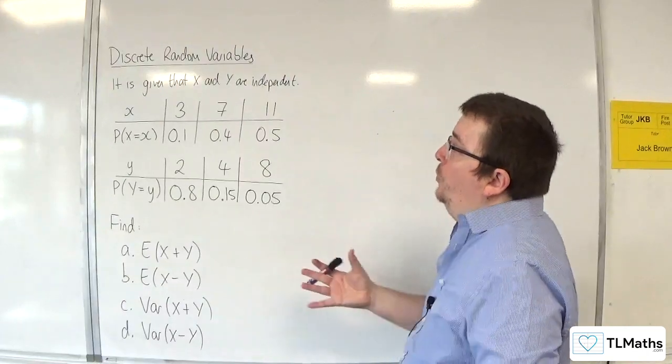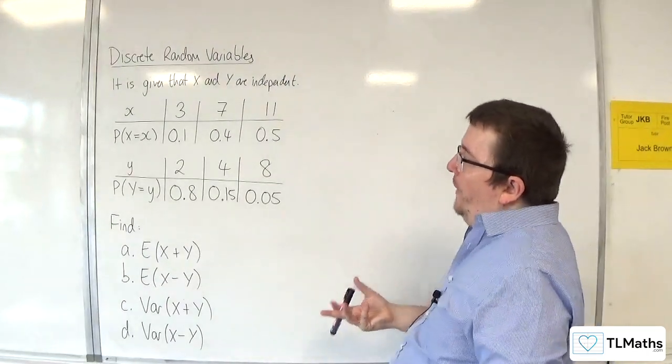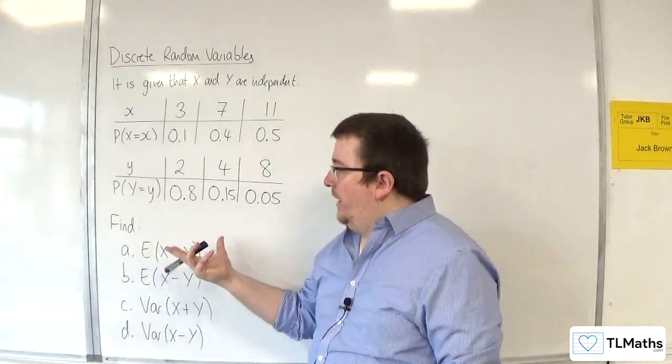So in this video we have two independent distributions, X and Y, and they're given to us here in these tables.